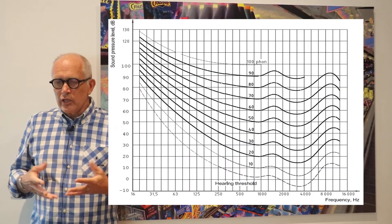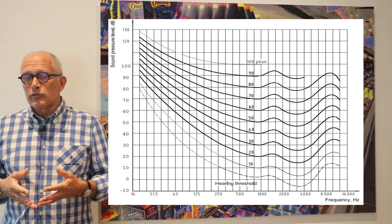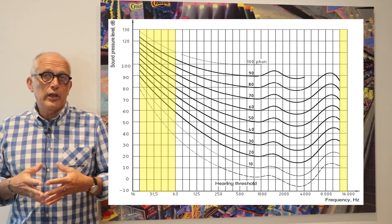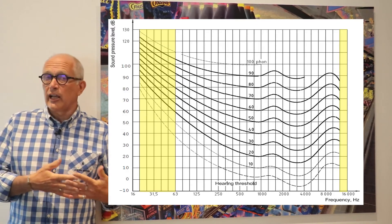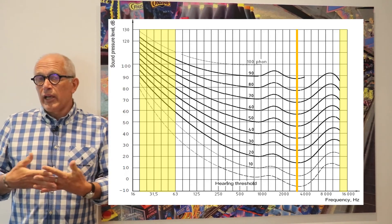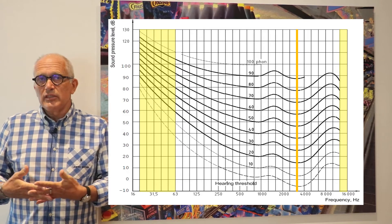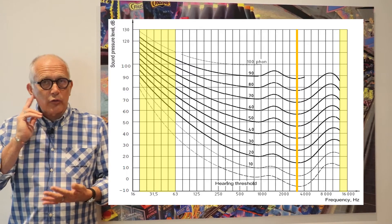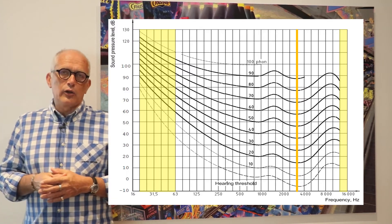You see here the normalized results and you can observe a number of things. First of course that we have low sensitivity at low frequency and at high frequency, and that we have a maximum sensitivity around 3 or 4 kilohertz which corresponds to a resonance of our ear canal.